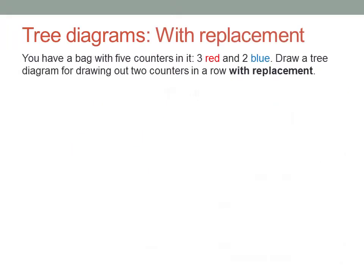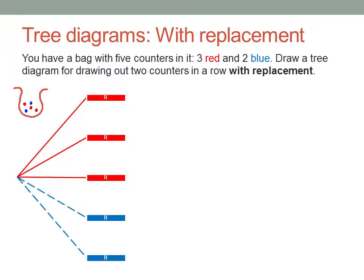There's another kind of situation where tree diagrams are very useful, and that's where you need to model doing something without replacement. First, let me show you how to model a simple event with replacement. Suppose you have a bag with five counters — three red ones and two blue ones — and you're going to draw out two counters in a row with replacement. The first counter could be any of the three red ones or either of the two blue ones.